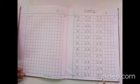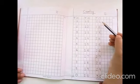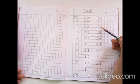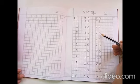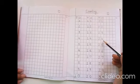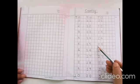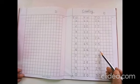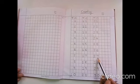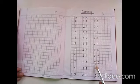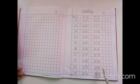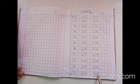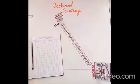Let's repeat this again children. 21, 22, 23, 24, 25, 26, 27, 28, 29, 30.